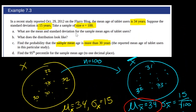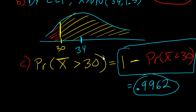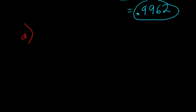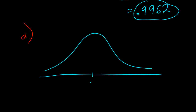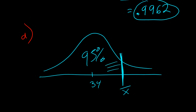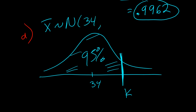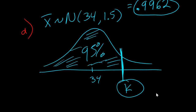Lastly, moving on to part D: find the 95th percentile for the sample mean. Let me draw out the distribution of X̄, with 34 in the center. The 95th percentile means there's some value K where 95% of the distribution is less than K. The sample mean follows a normal distribution with mean 34 and standard deviation 1.5.